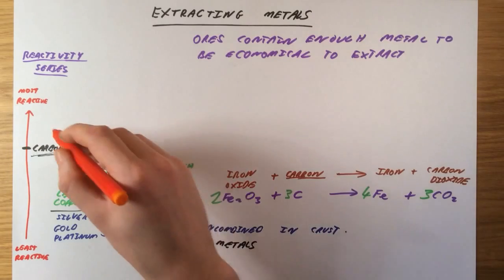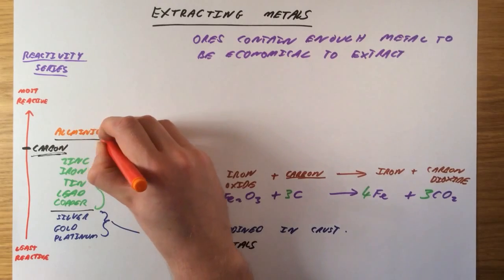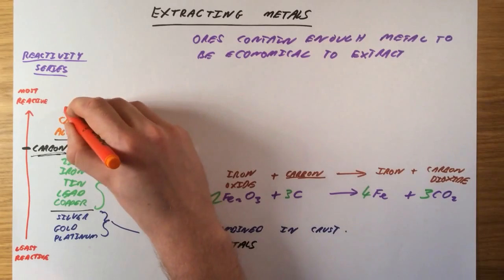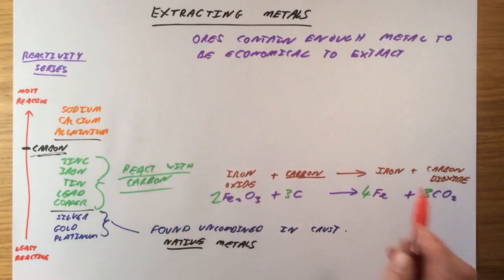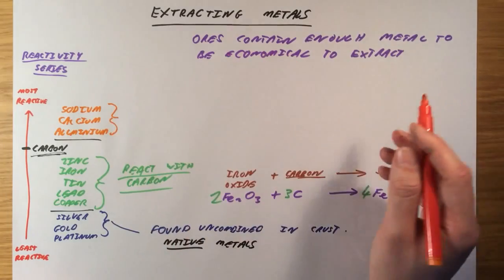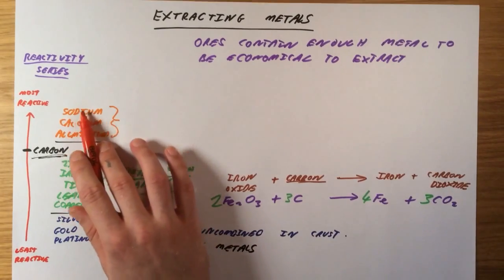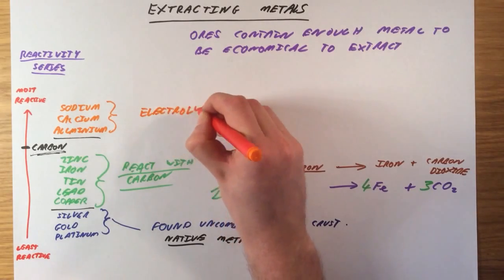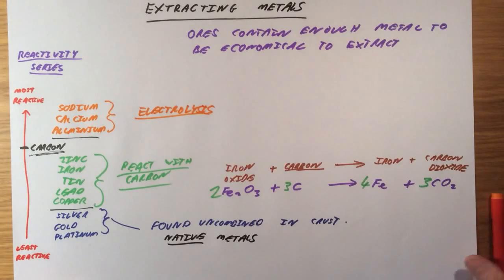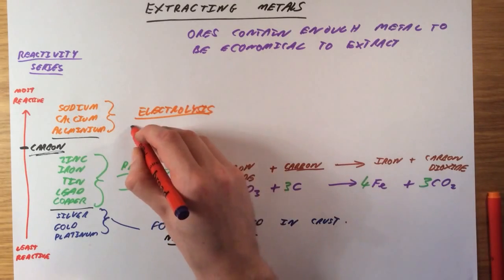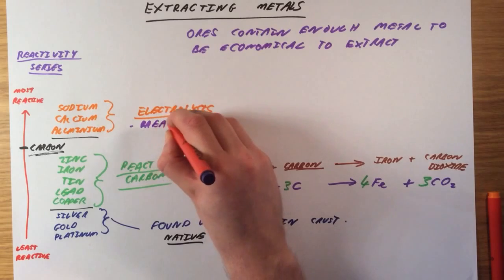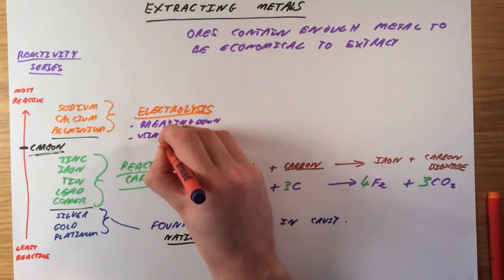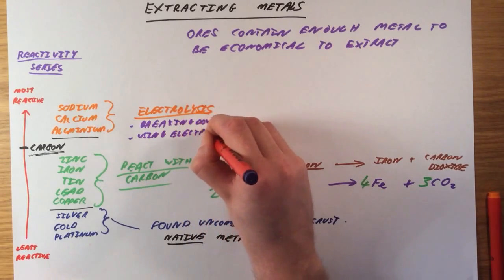So these kind of substances are things like aluminium, magnesium. We could then have calcium, sodium, potassium. Really reactive metals. So for these ones, we actually have to use a different process. We need to separate the metal from the ore. And we're actually going to use a process called electrolysis, which means breaking down a compound using electricity.